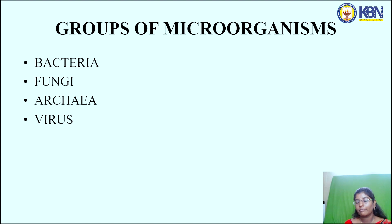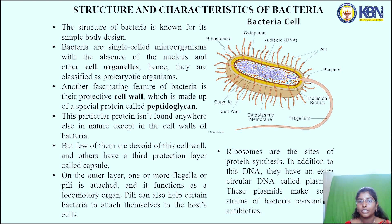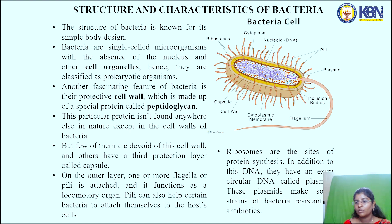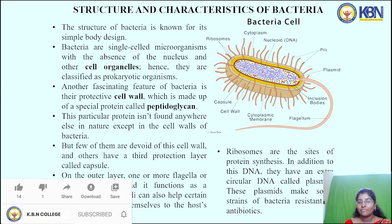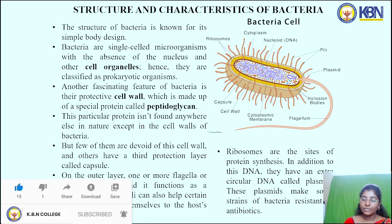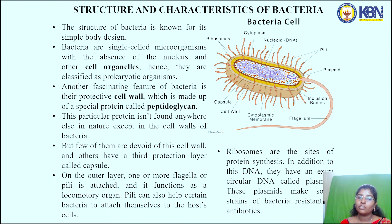Now let us know about some of the groups of microorganisms: bacteria, fungi, archaea, and viruses. The bacterial cell has a completely simple body design — it is a single-cell microorganism with the absence of a nucleus and some other cell organelles; hence, it is classified as a prokaryotic organism. It has a protective cell wall made up of a special protein called peptidoglycan, which is found only in the cell walls of bacteria.